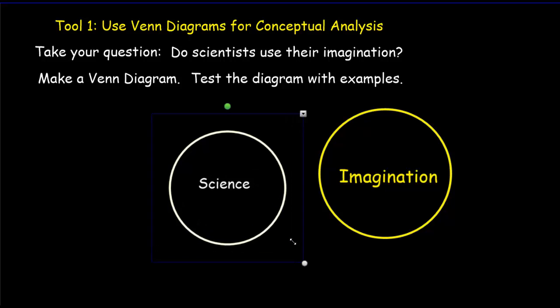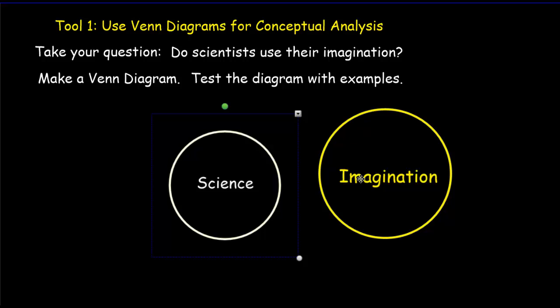I could go this way and say that scientists never use their imagination, but I want to test that with an example. And I want to come up with an example where I think a scientist uses their imagination. And usually when we want to test an example, we come up with something extreme. And so when I start thinking about if I put the two ideas together, imagination and science, I come up with ideas like wormholes. A scientist is studying wormholes. Is that going to involve the imagination?